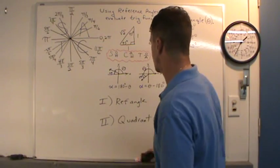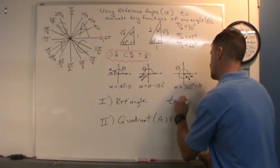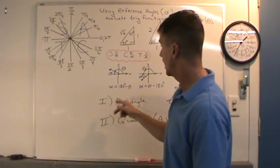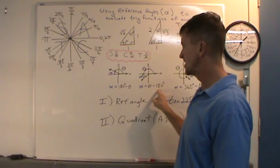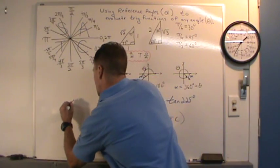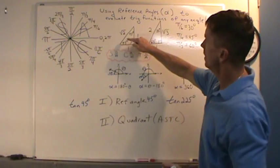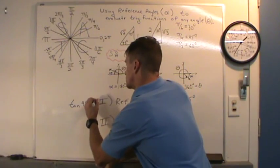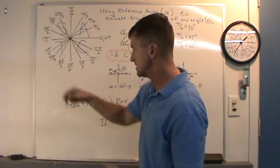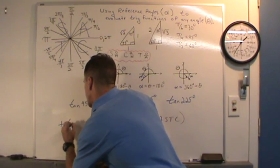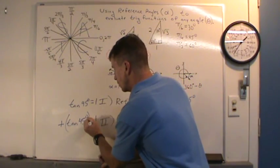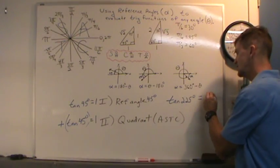How about the tangent of 225 degrees? The reference angle: 225 is in quadrant three, and 225 minus 180 gives reference angle 45 degrees. Tangent of 45 degrees: opposite over adjacent from the special right triangle is 1/1 = 1. Step two: 225 degrees is in quadrant three, where tangent is positive per ASTC. So the result is positive — tangent of 225 degrees is positive 1, not negative 1.